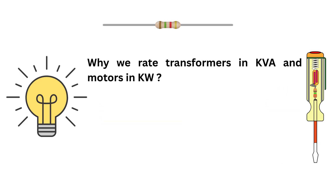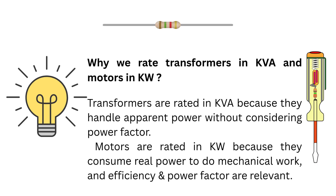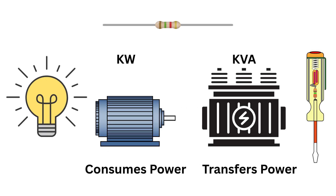Now if this question is being asked, here's how you can answer it in interviews. Transformers are rated in KVA because they handle apparent power without considering power factor. Motors are rated in Kilowatt because they consume real power to do mechanical work, and efficiency and power factor are relevant. So next time someone asks you, you'll know exactly why — it's all about what the device does with the power: transfer it or use it.